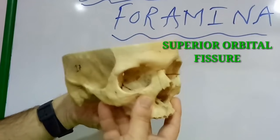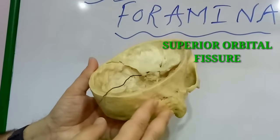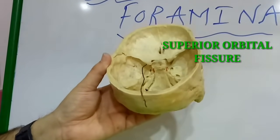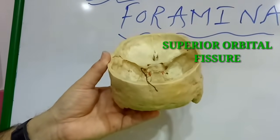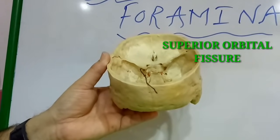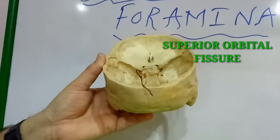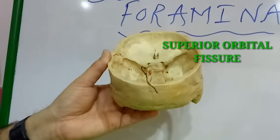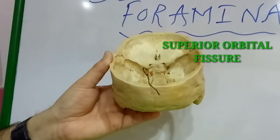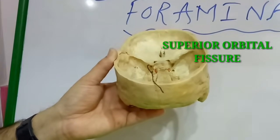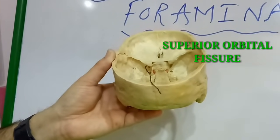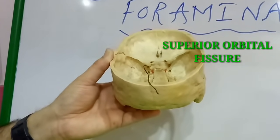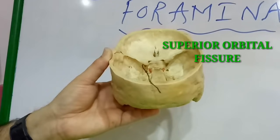The superior orbital fissure transmits the frontal nerve, lacrimal nerve, trochlear nerve, superior ophthalmic vein, the two divisions of the oculomotor nerve, nasociliary nerve, abducent nerve, and the inferior ophthalmic vein.